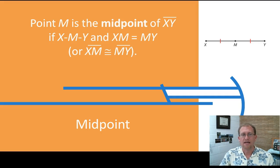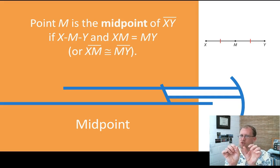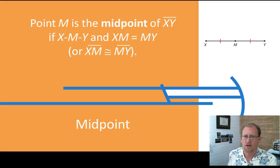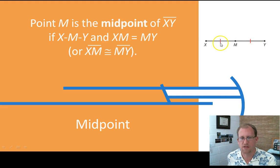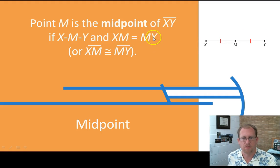Midpoints. If a point is between two other points, the two segments add up to the whole. But if the two segments have the same measure — if the segment on one side is congruent to the segment on the other — then we have found not just a point between, but the midpoint. So if XM is congruent to MY, these little hash marks mean they have the same measure, then M is not just between X and Y — M is the midpoint of XY.